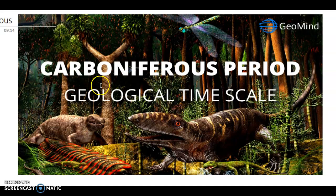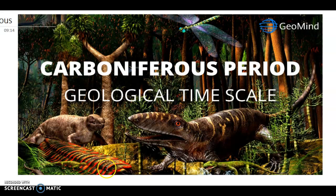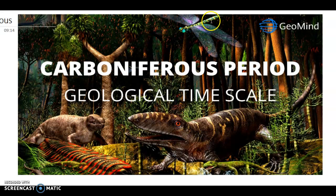Without further delay, let's start. First I would like to describe the thumbnail: you can see there is extensive forest in the background, some reptiles or tetrapods, an insect and arthropod — a centipede-type organism — and we will talk about those later in the second part of the video. This you can see is a dragonfly; its name was Meganeura and it was one of the largest insects, around 70 centimeters in length — that's about two feet.